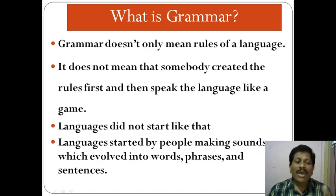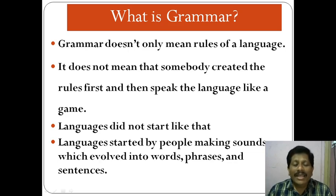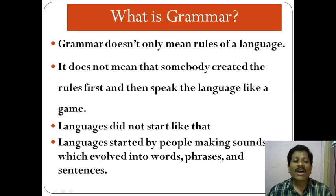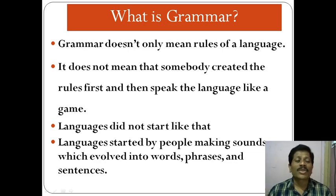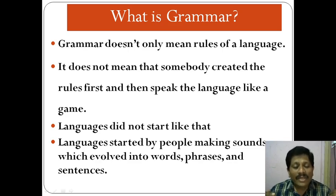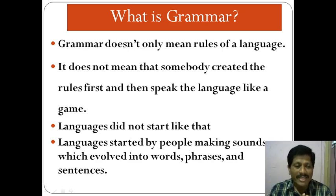Then, how did language start? Does language start from grammar? Languages did not start like that. Languages started by people making sounds which evolved into words, phrases, and sentences. Languages started when people began making some sounds to express their feelings, emotions, their needs. Those sounds developed into simple words, then phrases — phrases means two or three words which give some particular meaning — and then people started speaking in sentences. In this way, sounds developed into words, then phrases, then sentences. Language started with sounds.